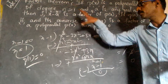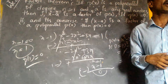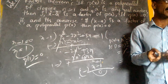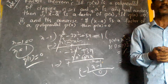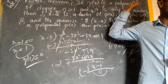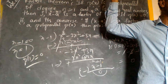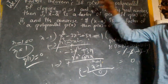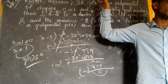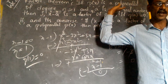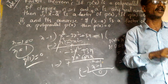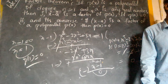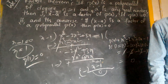By substituting 1 here, we get 0. That is the reason x minus 1 is a factor of this polynomial. By this proof, you can write generally: if p of x be any polynomial of degree n greater than 1, and a be some real number, then x minus a is a linear polynomial and is a factor of p of x, and p of a equals 0.